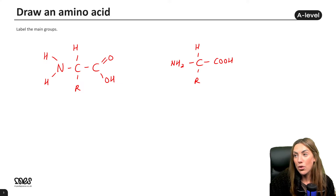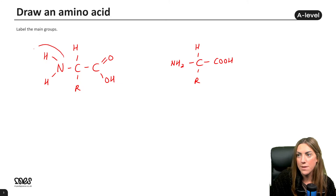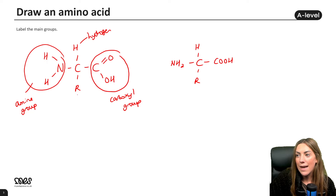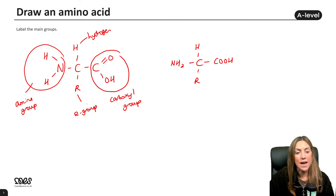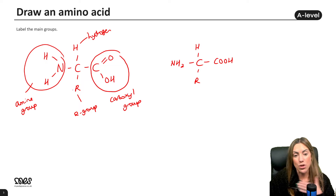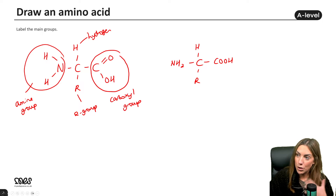Let's label the main groups: the amine group, the carboxyl group, the hydrogen, the central carbon, and the R group — which is the variable side chain. We can see all four elements: carbon, hydrogen, oxygen, and nitrogen. Remember, in cysteine there is sulfur in the R group, but in all other amino acids there is no sulfur. Practice drawing and labeling your own amino acid — it would be a nice question to get on an exam paper.